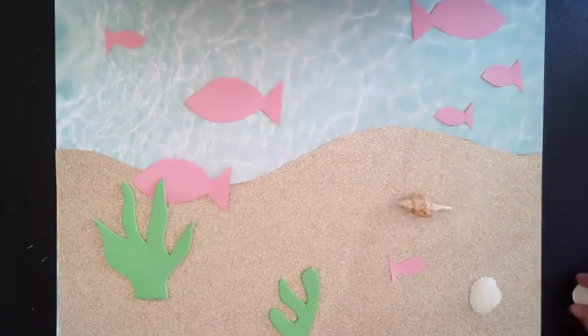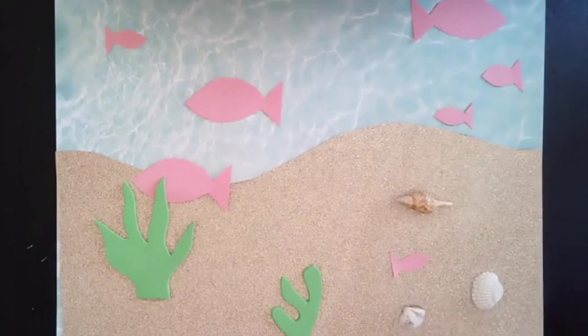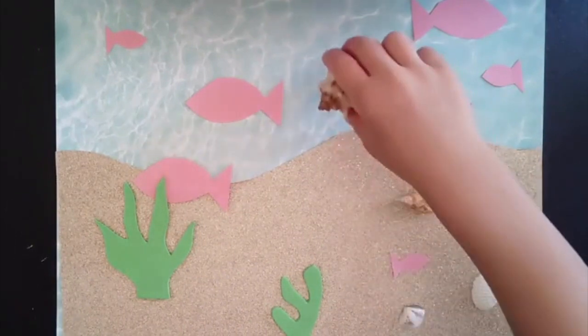The foreground would be in the front. For this piece it would be the seaweed and the middle ground would be the fish that are in between.